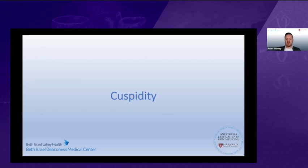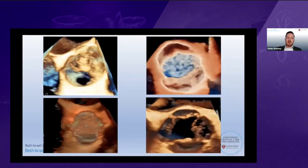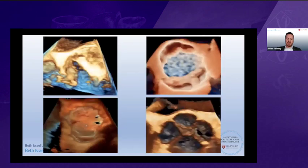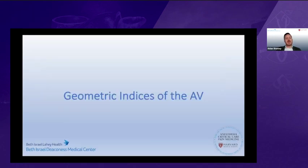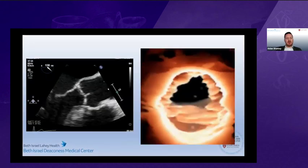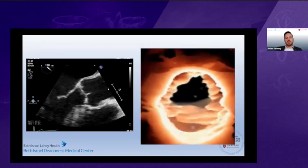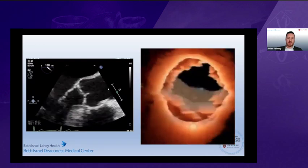It's important to highlight the cuspicity of the valve. While all valves are amenable to repair, bicuspid, unicuspid, and quadricuspid valves may be more technically challenging. Finally, we need to measure the geometric indices of the aortic valve. The aortic valve consists of the aortic cusps, limited cranially by the ST junction and caudally by the virtual basal ring. 2D echo does not do justice to measuring these geometric parameters, and 3D echo is really required to make accurate determination of these geometric indices.